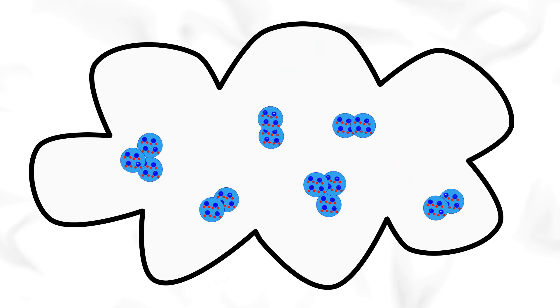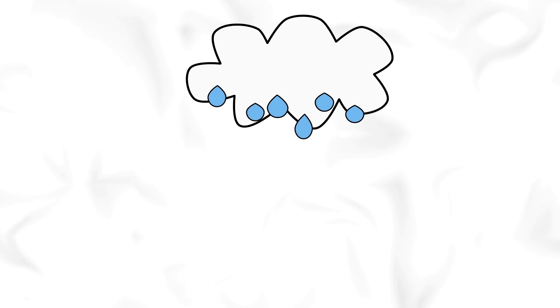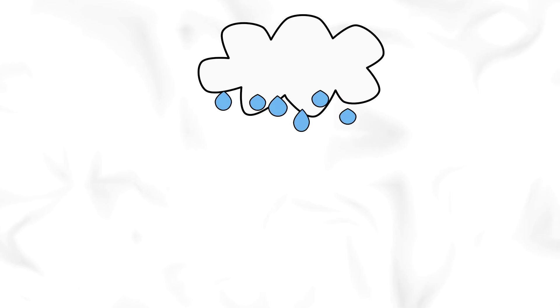The droplets of water in the clouds grow bigger by combining or mixing together. When they get heavy enough, they turn into drops that fall to the ground as rain, snow, hail, or sleet. We call that precipitation!